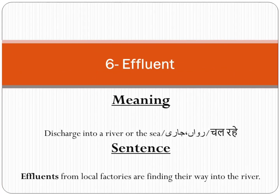Number six: Affluent. In English meaning: discharge into a river or the sea. In Urdu meaning: rawaan jaari, behna, jaari hona. Sentence: Affluent from the local factories are finding their way into the river. Mukaami factoryon ka waste ya fuzla darya mein apna raastah khud bana raha hai, ya rawa dawa hai.